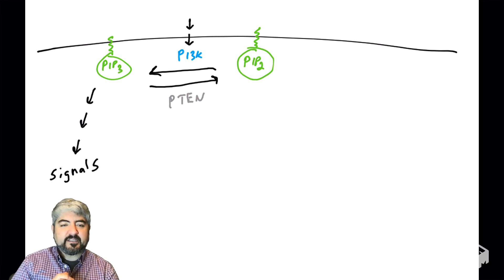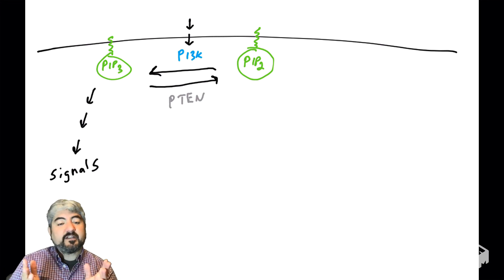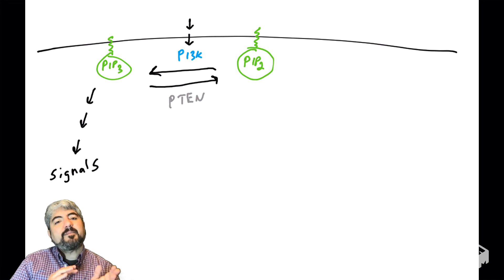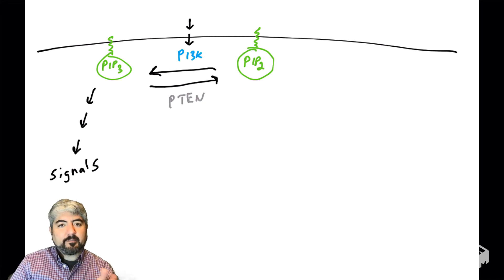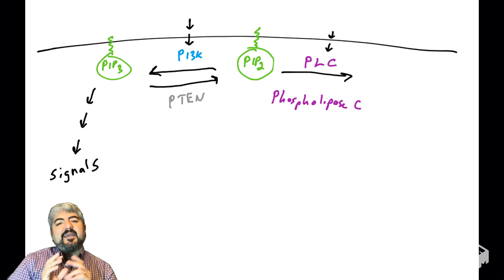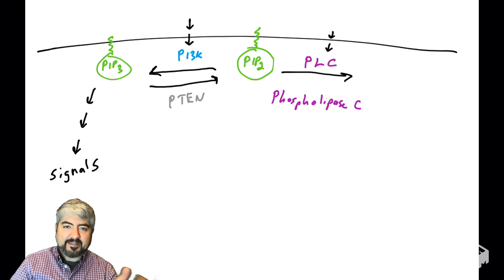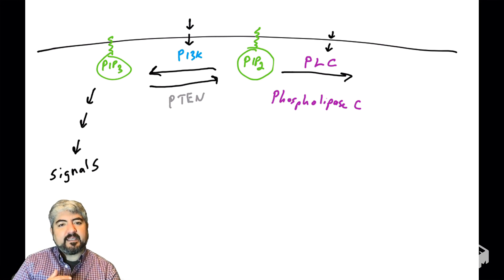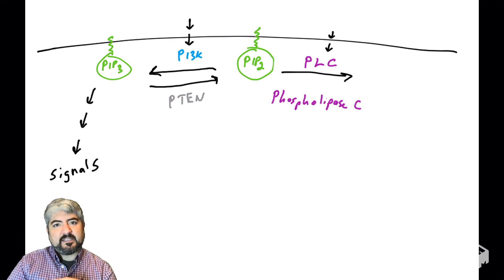This is how you typically see it drawn in many research articles. PIP2 can also be modified by other enzymes. PIP2 can be modified by an enzyme called PLC, or phospholipase C. Instead of having a kinase act on PIP2, we have a lipase acting on PIP2. Lipases break down lipids, and a phospholipase breaks down a phospholipid.